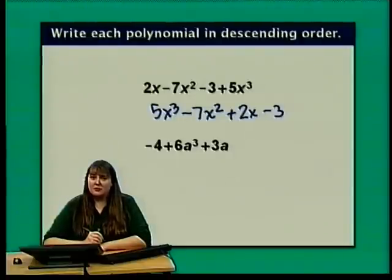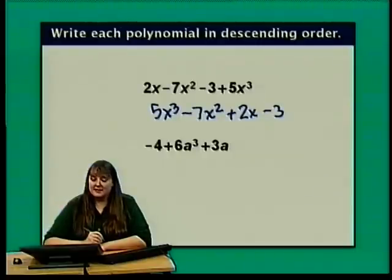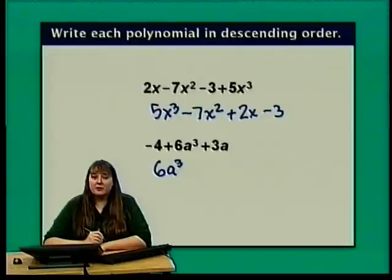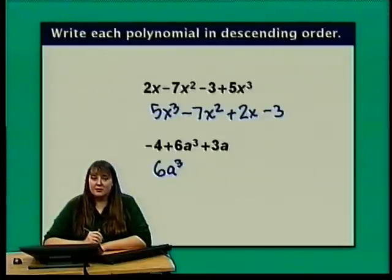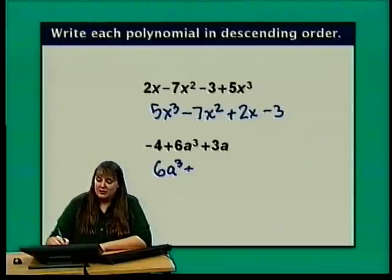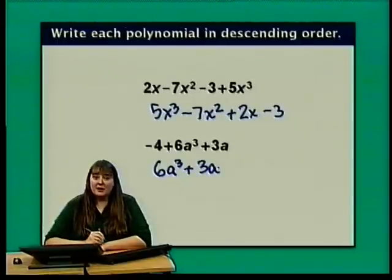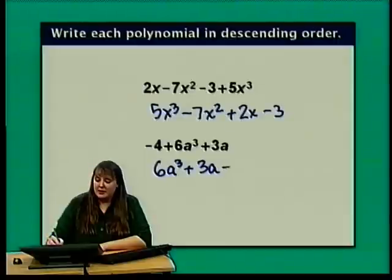For the polynomial negative 4 plus 6a cubed plus 3a, the highest degree term is 6a cubed. Working down, there's no second degree term, so we move to the first degree term 3a, and finally end with the constant minus 4. Written in descending order: 6a cubed plus 3a minus 4.